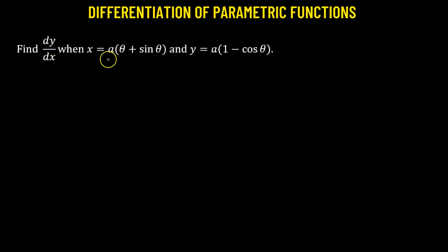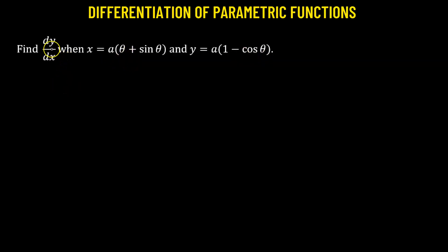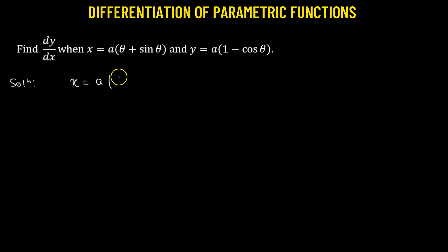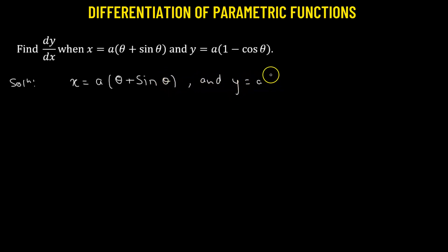Here we have x and y given in parametric form, meaning both x and y depend on the parameter theta. Using this information, we need to obtain the derivative of y with respect to x. We are given x equals a times theta plus sine theta, and y equals a times 1 minus cosine theta.